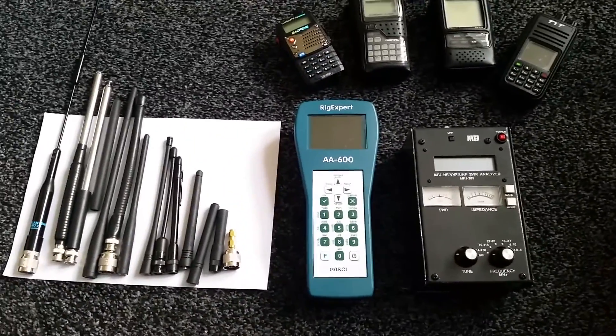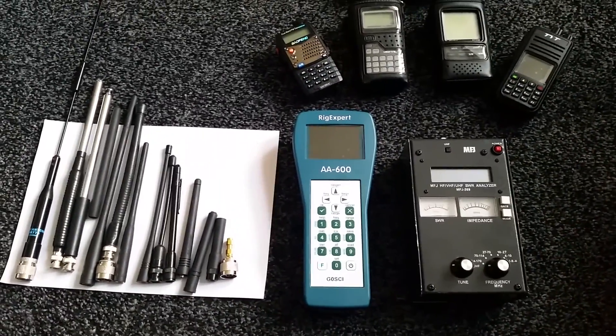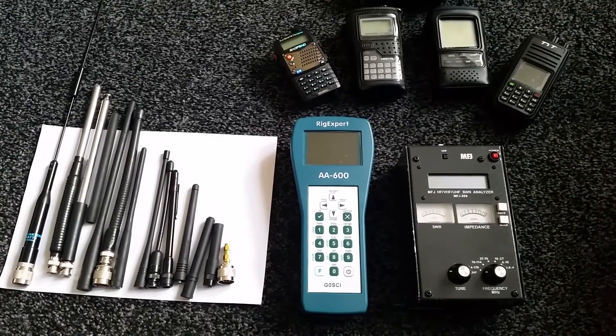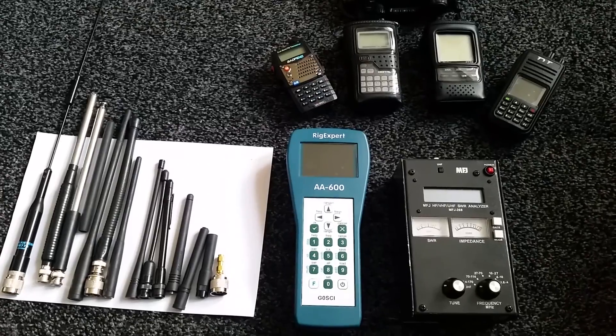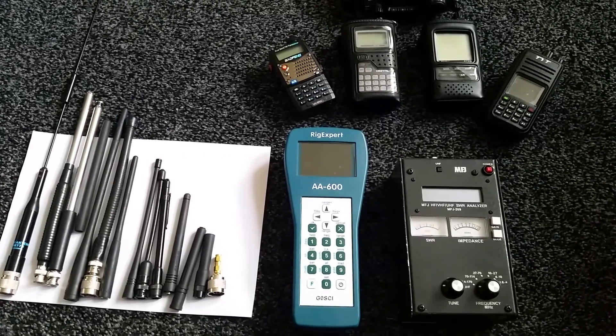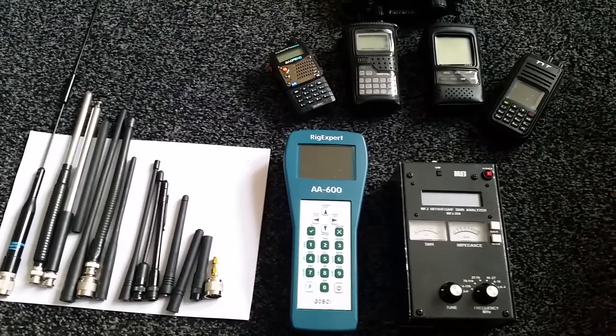Hello, my name is Barry, callsign G0SCI. I was reading an article about antennas on handsets, the rubber duck type, and apparently the BFN is the worst of the lot, so I thought I'd check it out for myself.